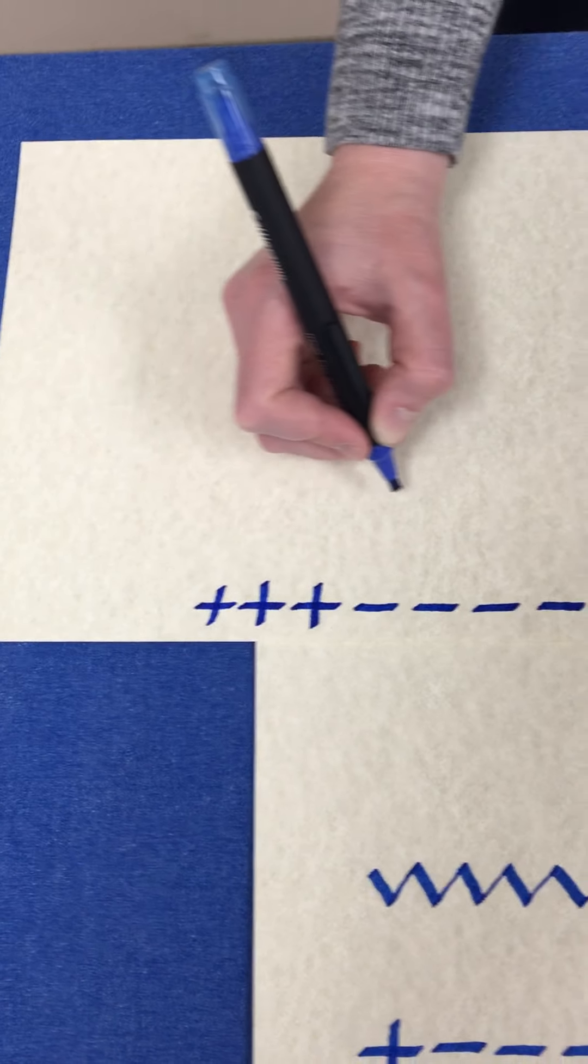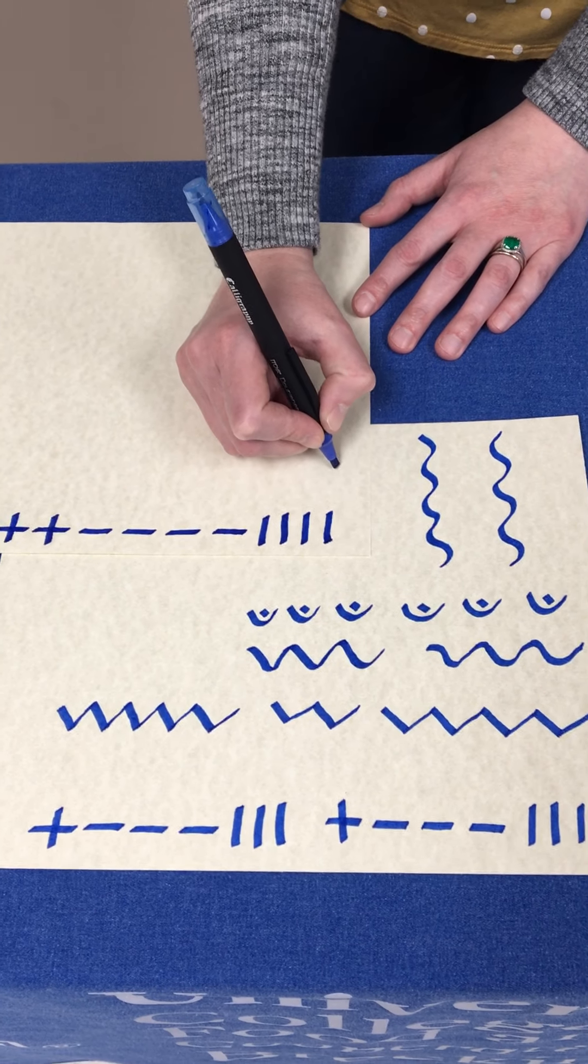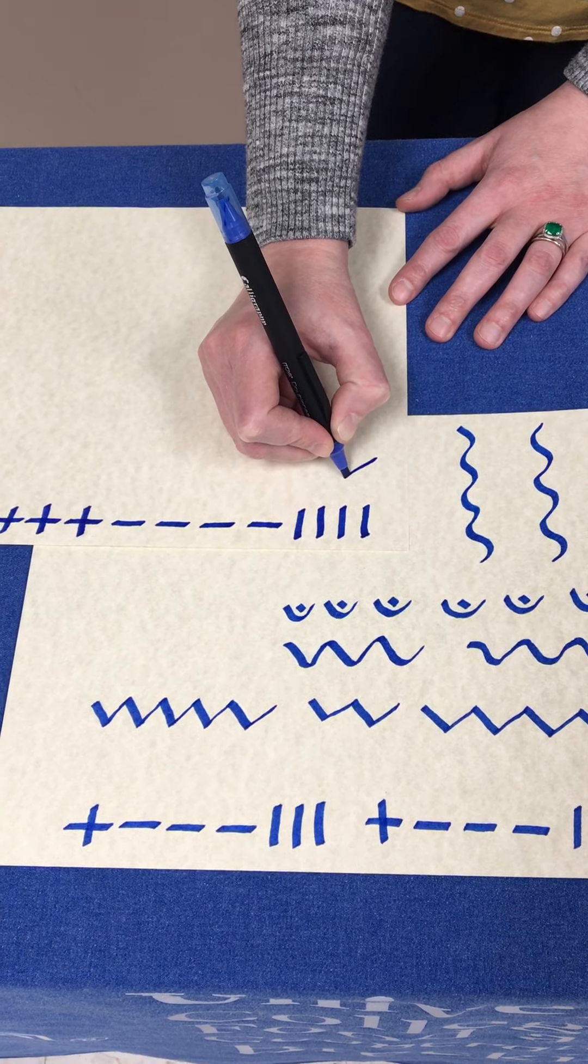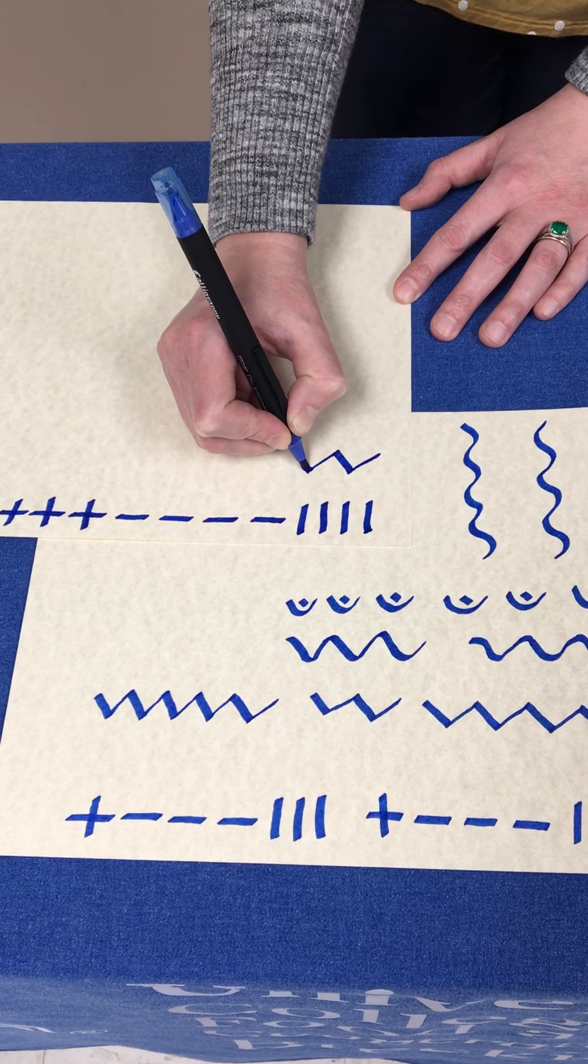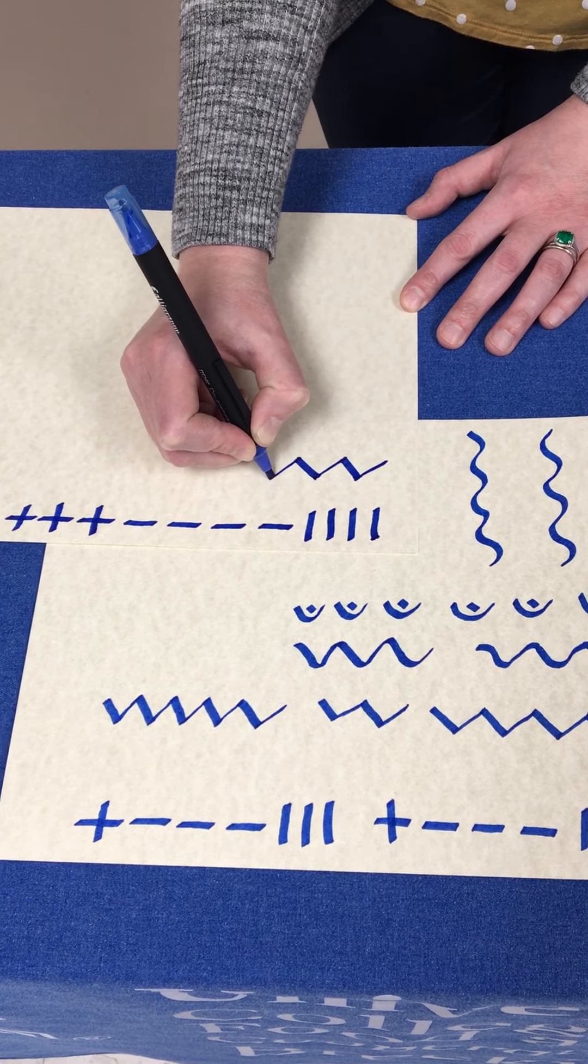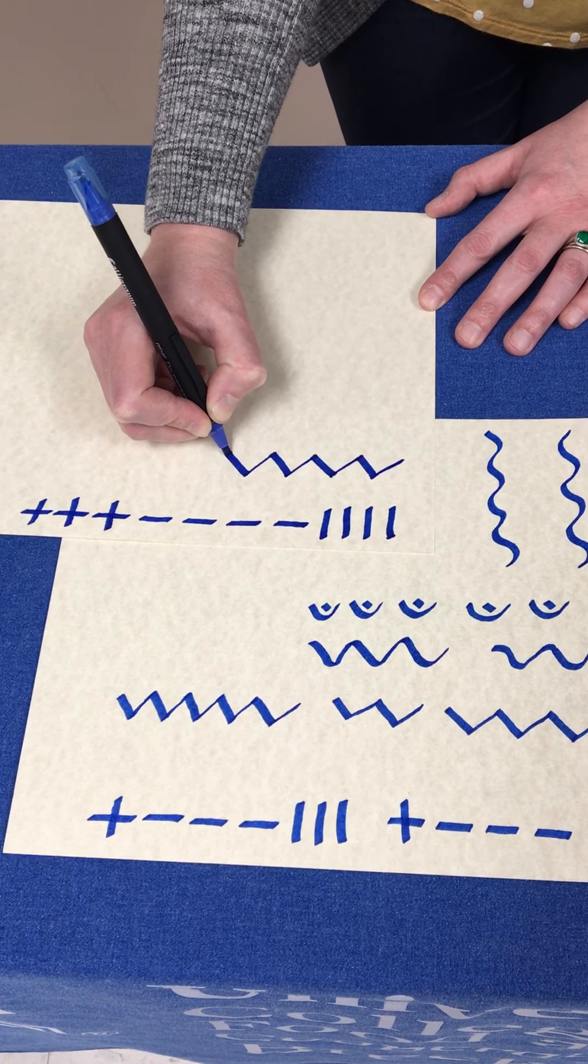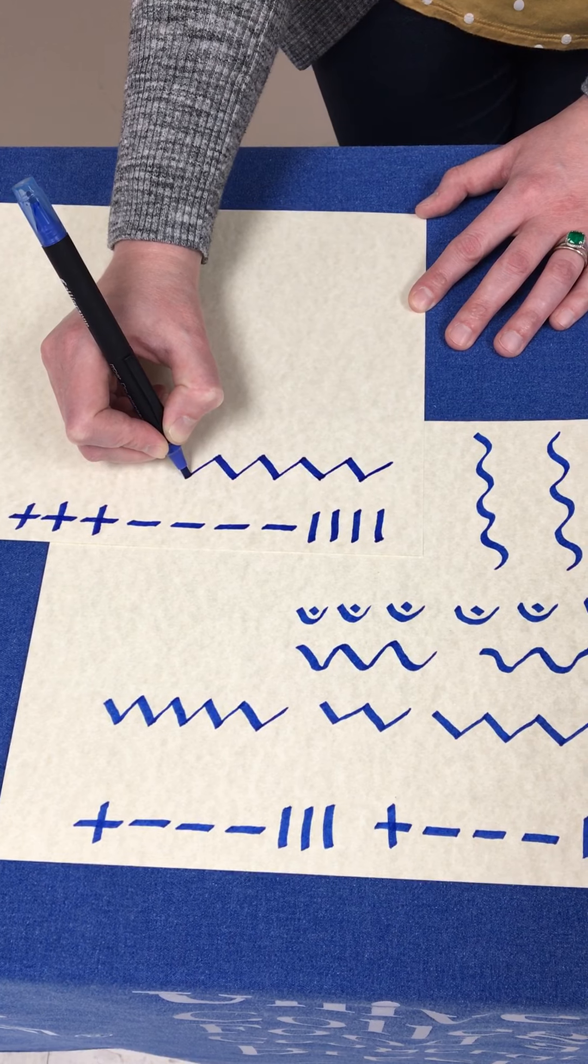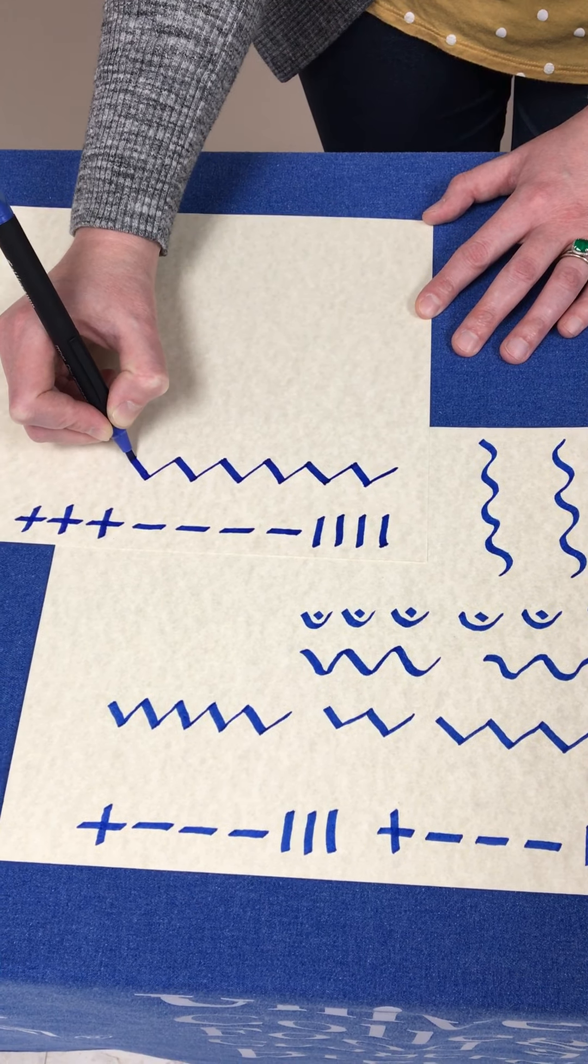The next shape is a zigzag, and this is a great way to practice those thin upstrokes and thick downstrokes without moving your pen, or moving your hand, I mean. So, I'm not readjusting my pen as I go, and this is allowing me to make thin upstrokes and thick downstrokes. This is one of my favorite techniques.